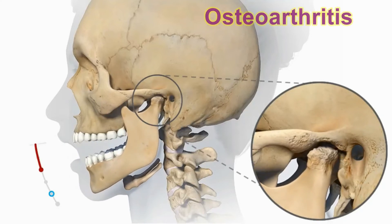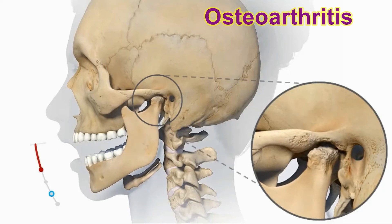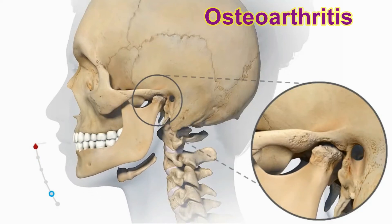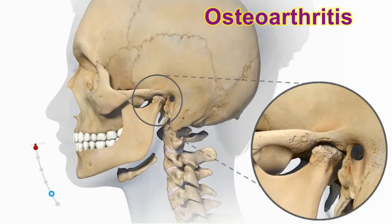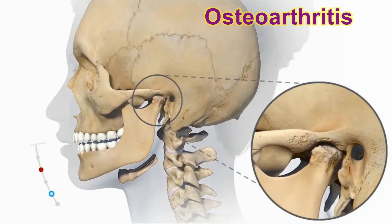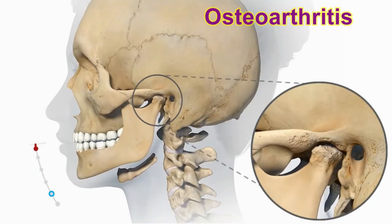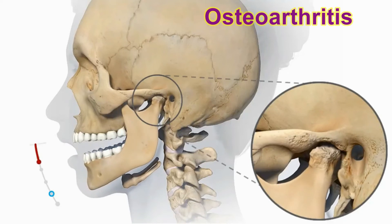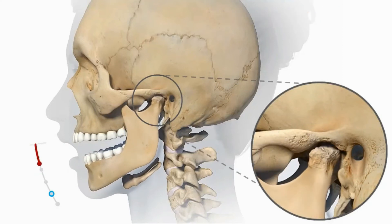Osteoarthritis is a common form of degenerative arthritis which can affect any joint in the body. It is associated with joint overuse and becomes more common with age. Osteoarthritis of the jaw is characterized by the destruction of the hard and soft tissues around the jaw joints, which can change the shape and functioning of the jaw — on one or both sides. Symptoms include pain, swelling, and stiffness lasting more than six weeks, and restricted joint movement or locking of the jaw.